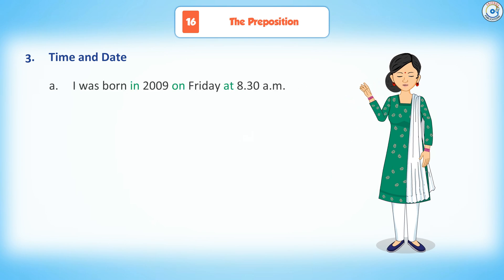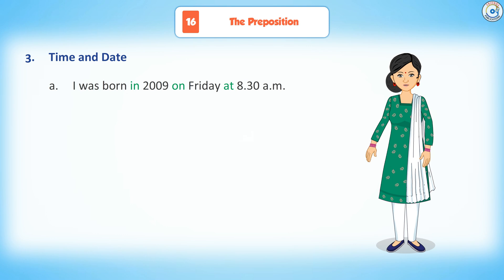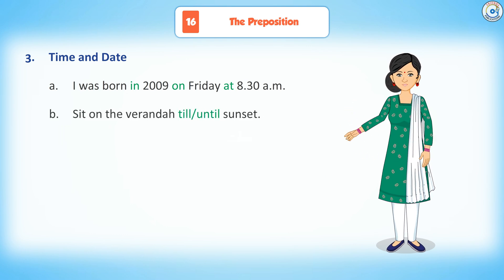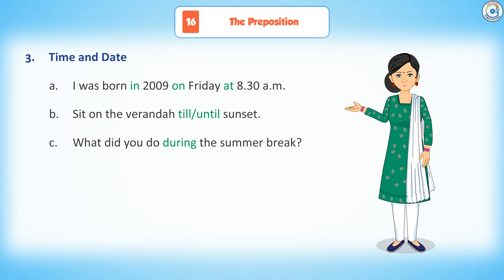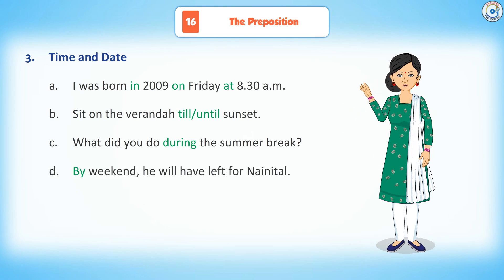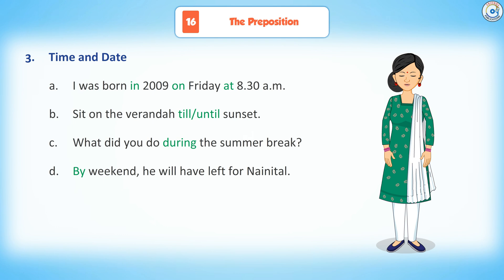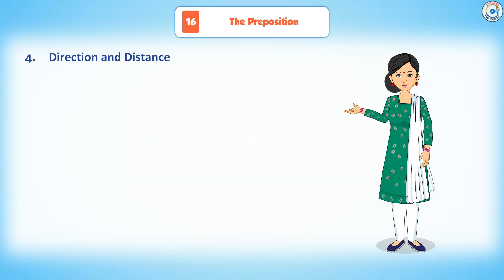Third, time and date. I was born in 2009, on Friday, at 8:30 a.m. Sit on the veranda till sunset. What did you do during the summer break? By the weekend, he will have left for Nainital. I have seen her a lot over the last few days.